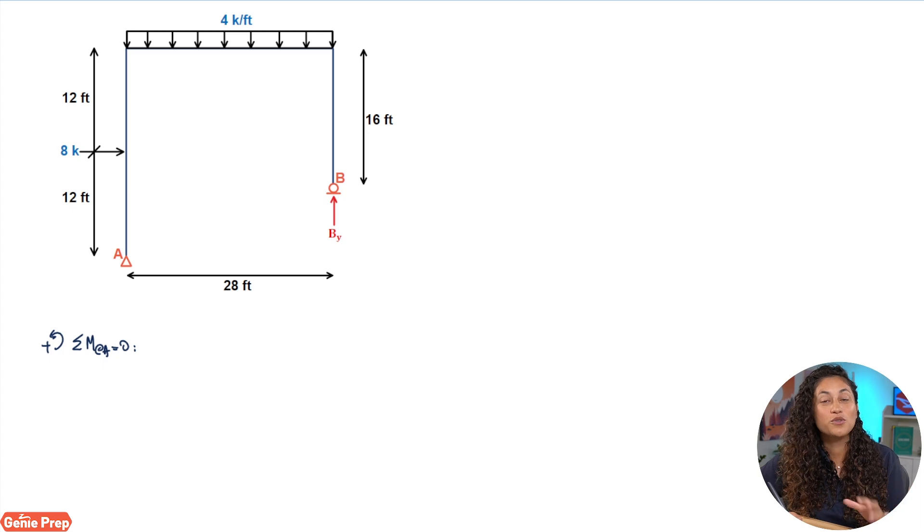Okay guys so the first thing we're gonna do here is set up our moment equation. So we're gonna do the summation of the moment at A equals to zero and our positive sign convention is going to be counterclockwise. Now also we are assuming that BY is going up, and what that means is that if we get a positive answer for BY that means our assumption is correct, and if we get a negative answer that means our assumption is wrong and that BY should be going down.